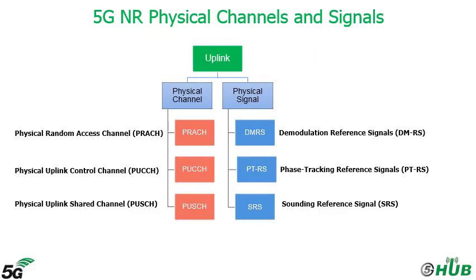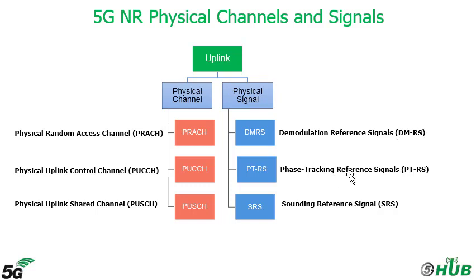Regarding uplink channels and signals, we have 3 uplink physical channels and 3 physical signals. We have physical channels: Physical Random Access Channel, Physical Uplink Control Channel, and Physical Uplink Shared Channel. Regarding the physical signals, we have Demodulation Reference Signal, Phase Tracking Reference Signal, and Sounding Reference Signal — similar to LTE and downlink.